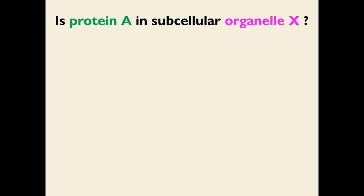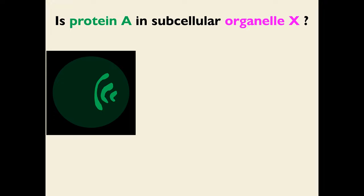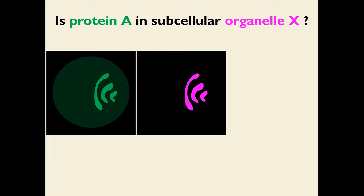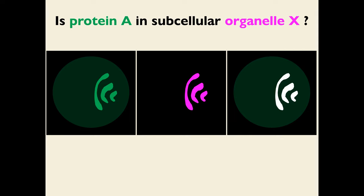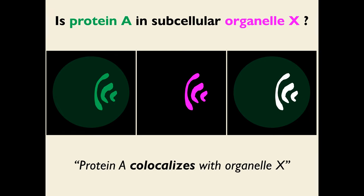Another common question is whether protein A is in subcellular organelle X. You may have a protein everywhere in the cytoplasm but enriched in a specific organelle. You have, in another channel, a marker for that organelle. You can see that protein A is enriched in organelle X — and so in this case, you can say that protein A co-localizes with organelle X.